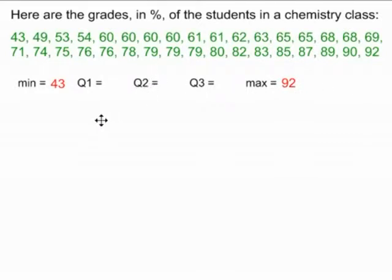Q2 is the median of our data, so we have to use the median formula. n plus 1 over 2, in this case, is equal to 34 plus 1 over 2, because there are 34 grades in this chemistry class.